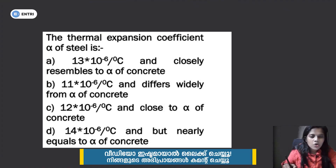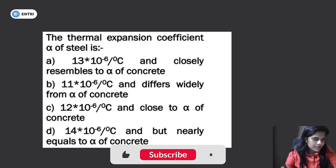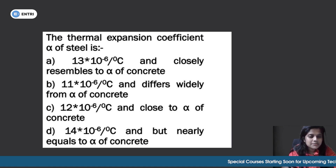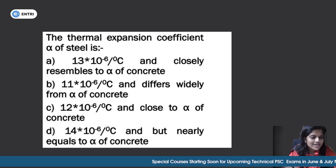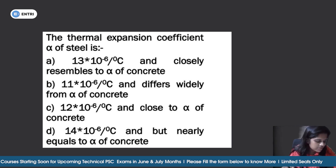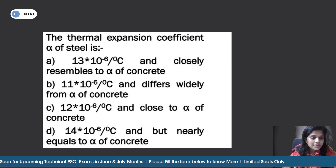First question: the thermal expansion coefficient of steel. The options are: 13×10⁻⁶ per degree Celsius, which closely resembles alpha of concrete at 11×10⁻⁶ per degree Celsius; differs widely from alpha of concrete at 12×10⁻⁶ per degree Celsius; close to alpha of concrete at 14×10⁻⁶ per degree Celsius; or nearly equals alpha of concrete.